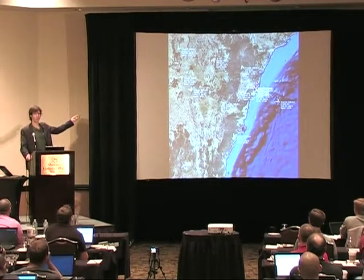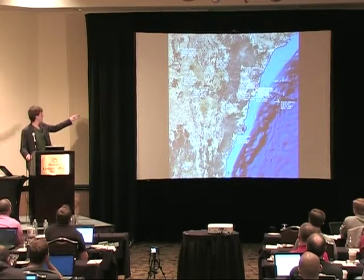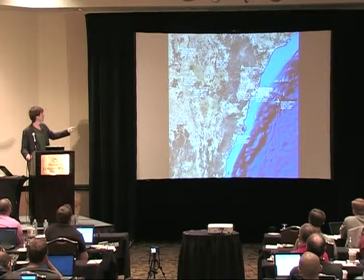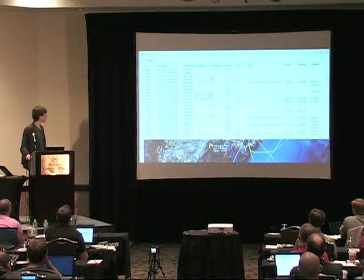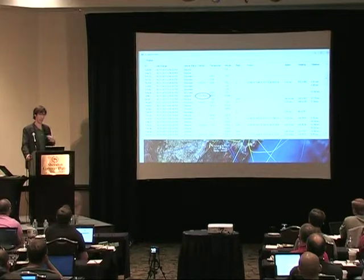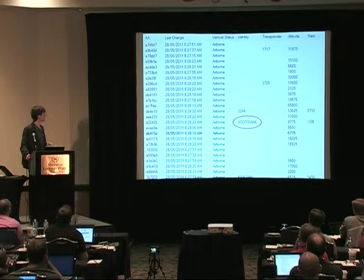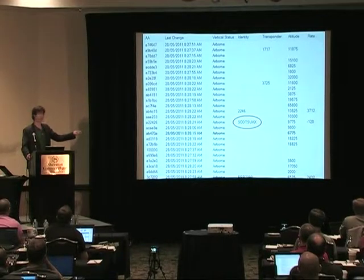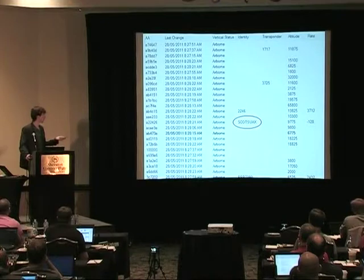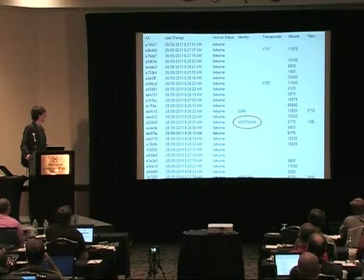You'll see some interesting things sometimes. This is when the Queen was in town — so this is her plane, Regal 1, R-E-G-L-1. Pluto 07 might have been around the time of Obama, I'm not entirely sure. The IDs are programmable so you can put in whatever you like.